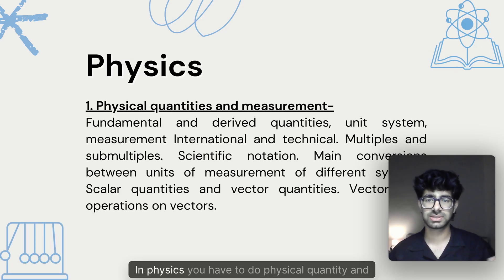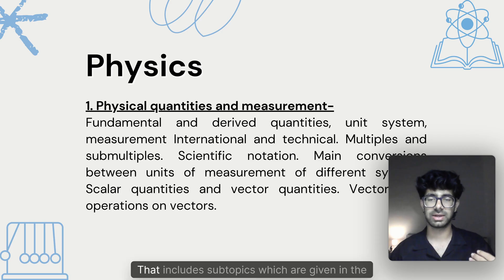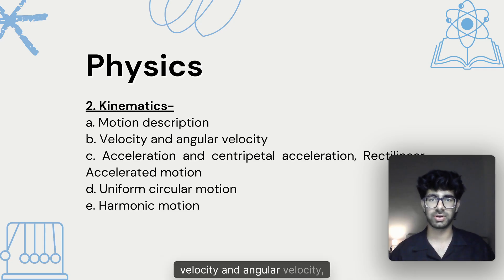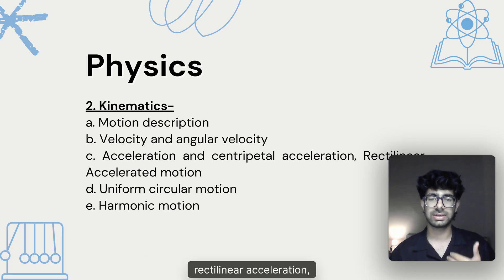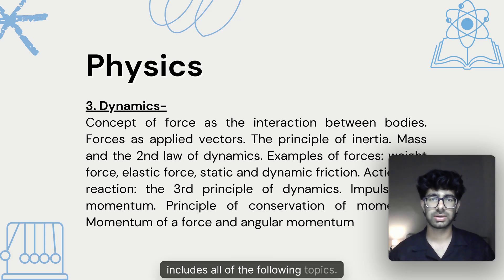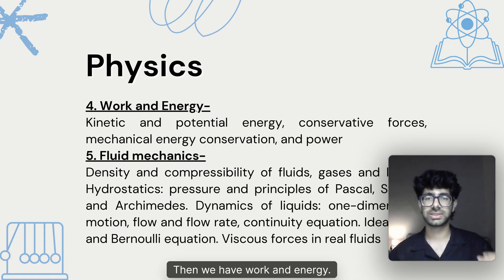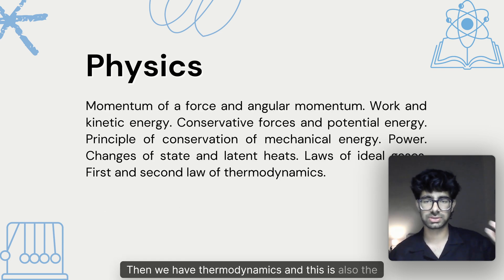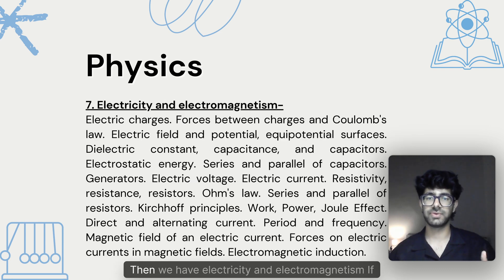In physics, you have to cover physical quantities with subtopics shown on screen. The second unit is kinematics, which includes motion description, velocity, angular velocity and acceleration, centripetal acceleration, rectilinear and accelerated motion, uniform circular motion, and harmonic motion. Dynamics includes all the following topics. Then we have work and energy, fluid mechanics, thermodynamics, and electricity and electromagnetism.